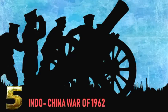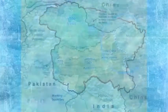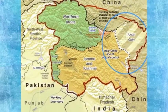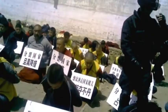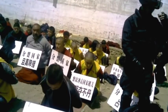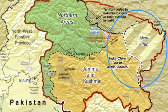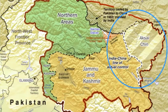The Indo-China War was a war between China and India that occurred in 1962. A disputed Himalayan border was the main pretext for war, but other issues played a role. A series of violent border incidents occurred after the 1959 Tibetan uprising, when India had granted asylum to the Dalai Lama. The war ended when China declared a ceasefire on 20 November 1962 and simultaneously announced its withdrawal to its claimed Line of Actual Control.